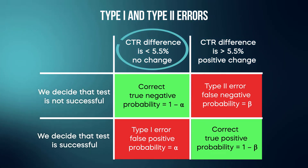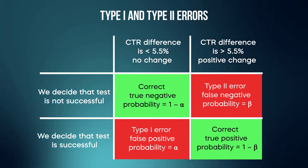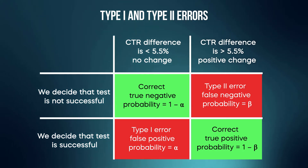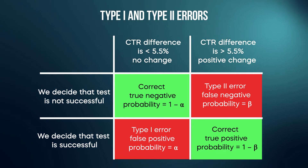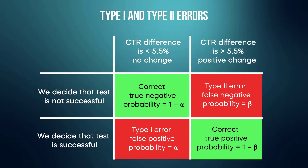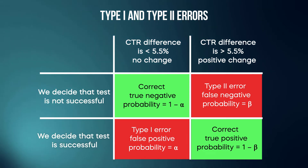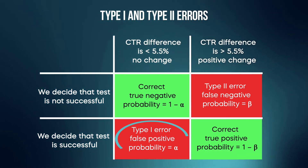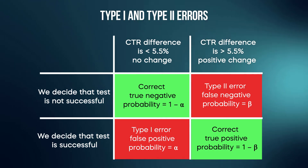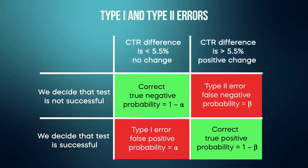When we have a click-through rate difference less than 5.5 percent — meaning no change according to our definition, no positive impact from the test — and we decide the test is not successful, that is a correct decision called a true negative. The probability of that decision is 1 minus alpha, so 95 percent if we chose alpha of 5 percent. In the same situation, if we do decide the test is successful, that is called type 1 error — a false positive — with probability equal to alpha, so 5 percent.